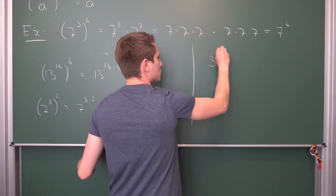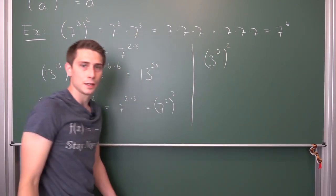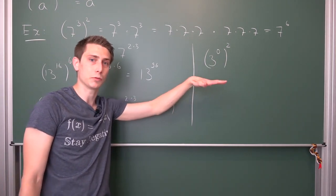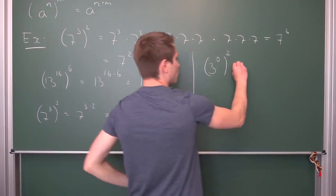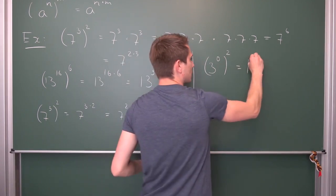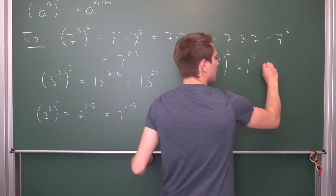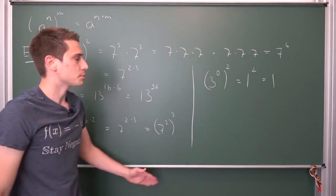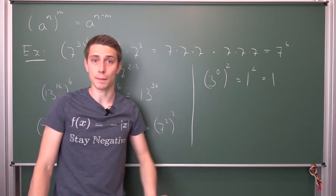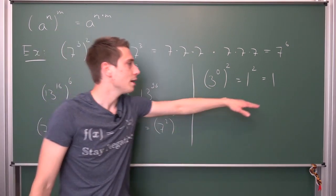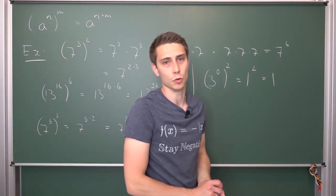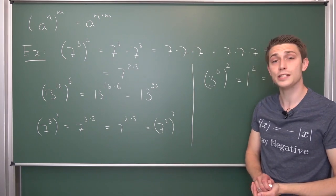One more little rule you can derive: if you have, for example, 3 to the zero power and then squared — every a raised to the zero power, except when a equals zero, evaluates to exactly 1. So 1 squared is 1 times 1, which is simply 1. This makes perfect sense because this expression is nothing but 3 to the zero times 2 power — which is 3 to the zero power, which is 1. This holds for every a not equal to zero.